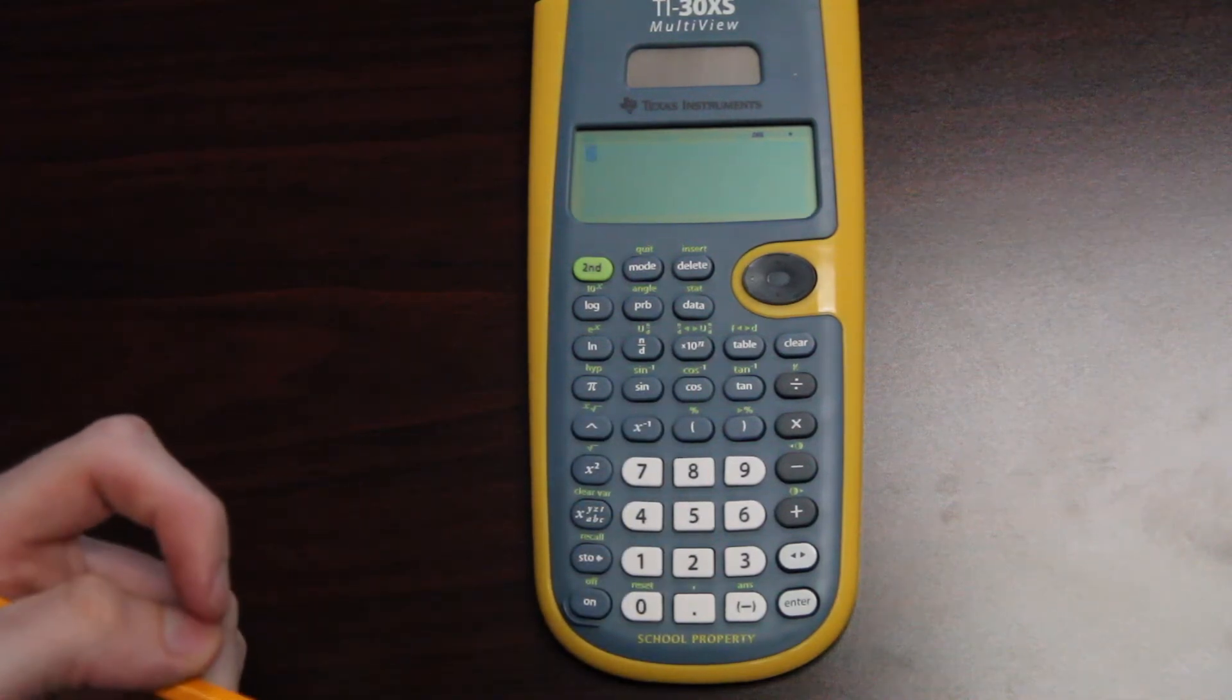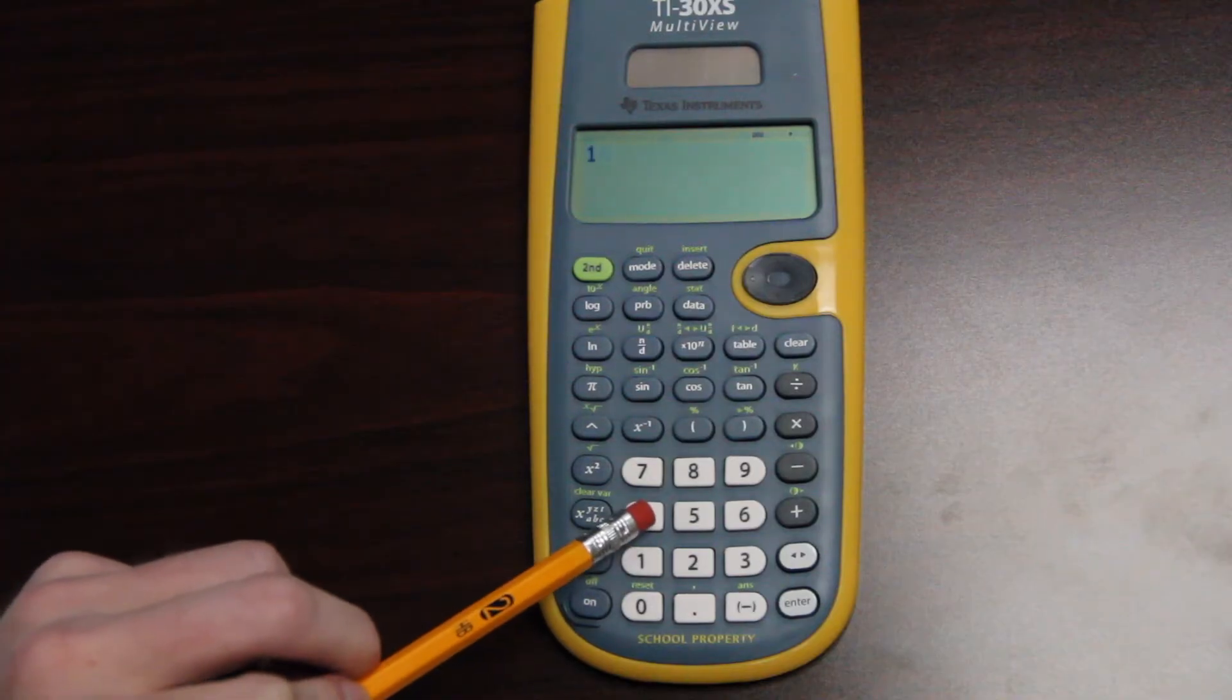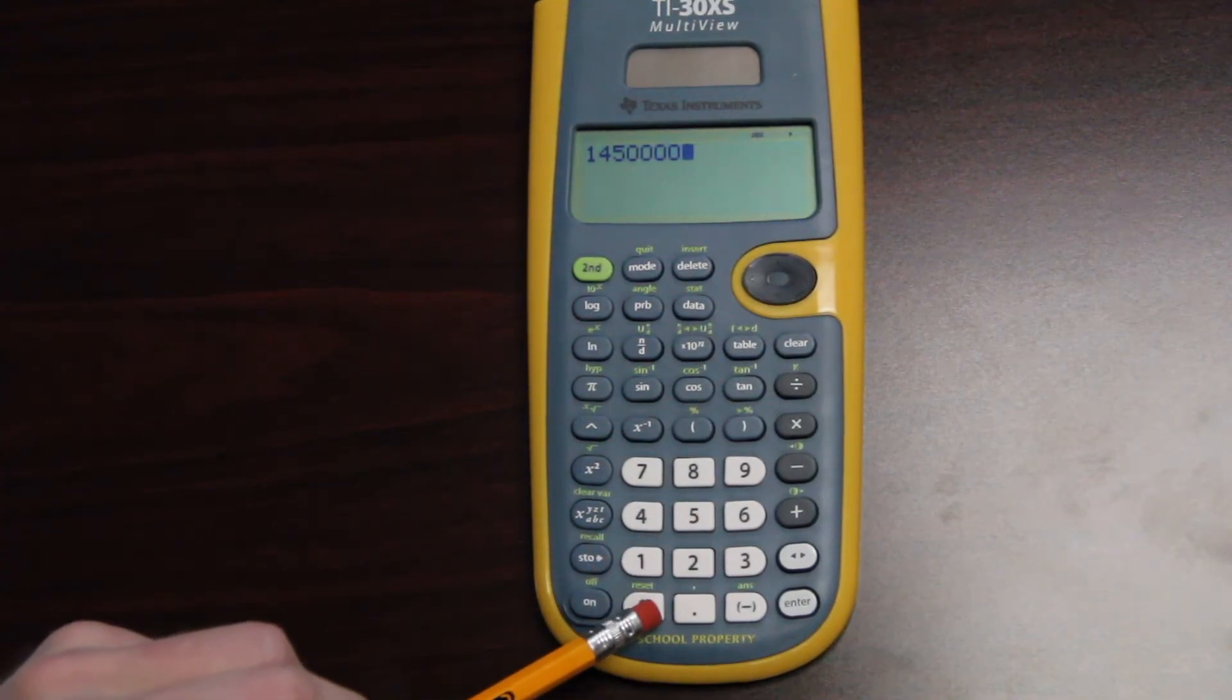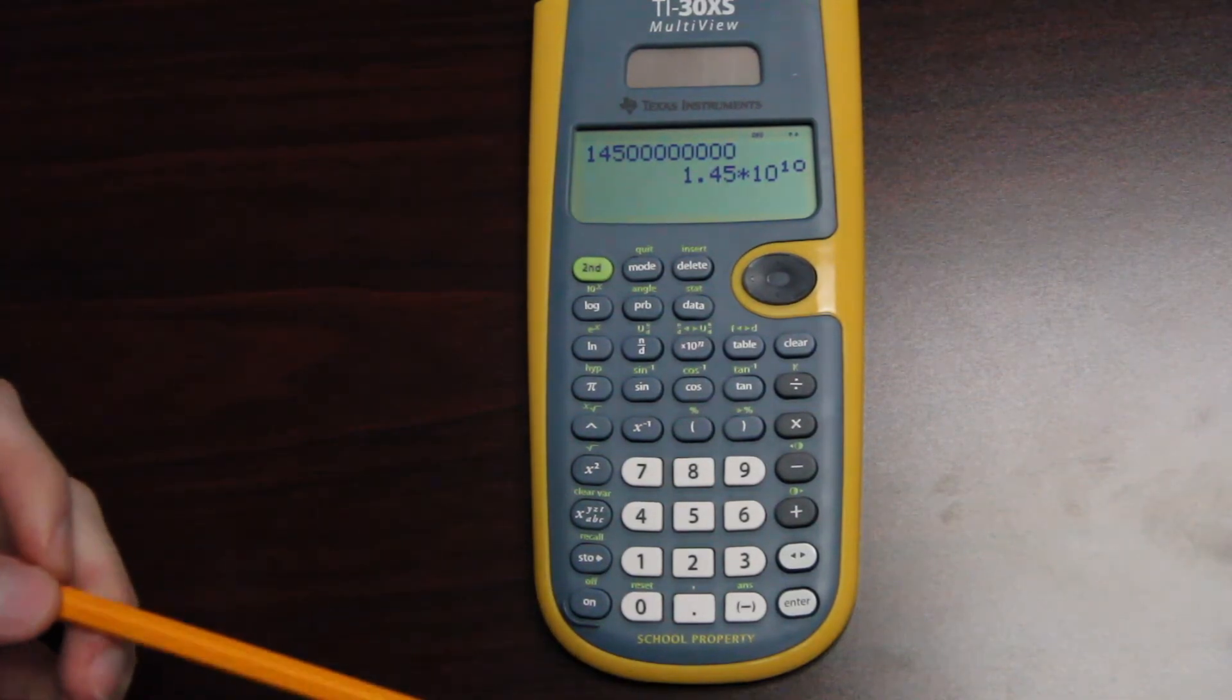Well, there's a way to represent that on your calculator. So let's say you have a number like one, four, five, with a whole bunch of zeros at the end of it like that. And you want to know how it's represented in scientific notation. If I hit enter, it'll give it to me in scientific notation, 1.45 times 10 to the 10th.